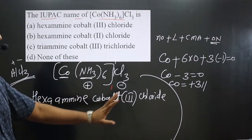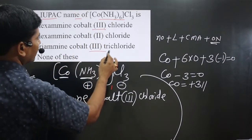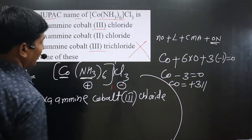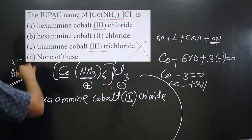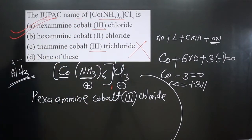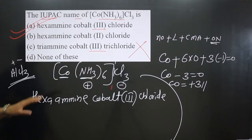Naming is what? Hexaammine cobalt 3 chloride. Any option? Hexaammine cobalt 3. You can see two options are there. Trichloride. You can see this blunder mistake is there. Hexaammine cobalt 3 chloride. You can see we have option A. Hexaammine cobalt 3 chloride. You can see for confusing the students they have given trichloride. But anyway that is not correct. Only option A is correct. Perfect. Thank you.